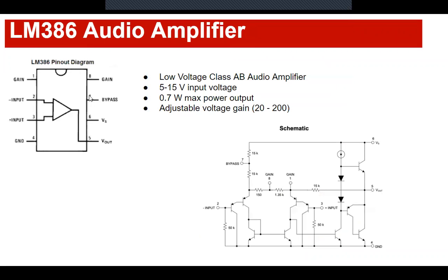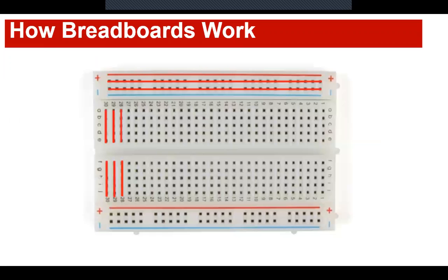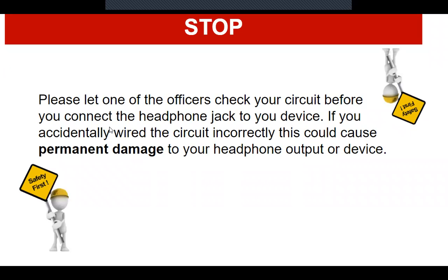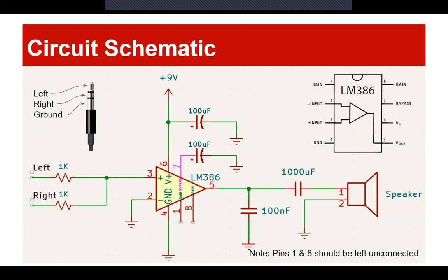That concludes the explanation of amplifiers. Quick reminder on how breadboards work: the power rails are all connected together along the rails, and the working rows are connected in columns. Once you finish your circuit, please let one of us check it. If you accidentally put 9 volts from the battery into your headphone jack, it'll probably blow it up — so have us check it. Safety first.